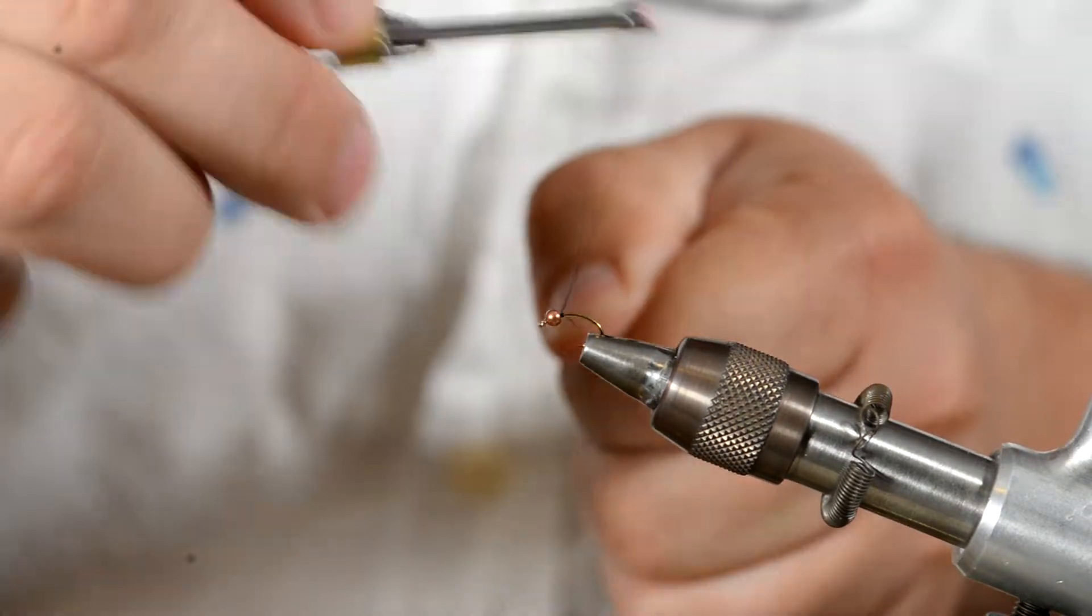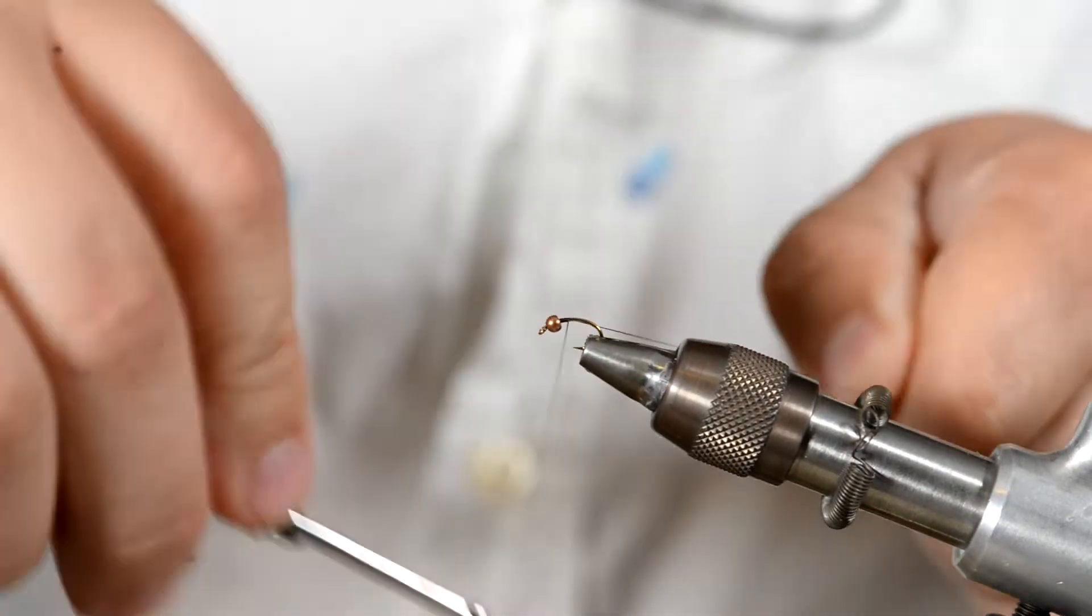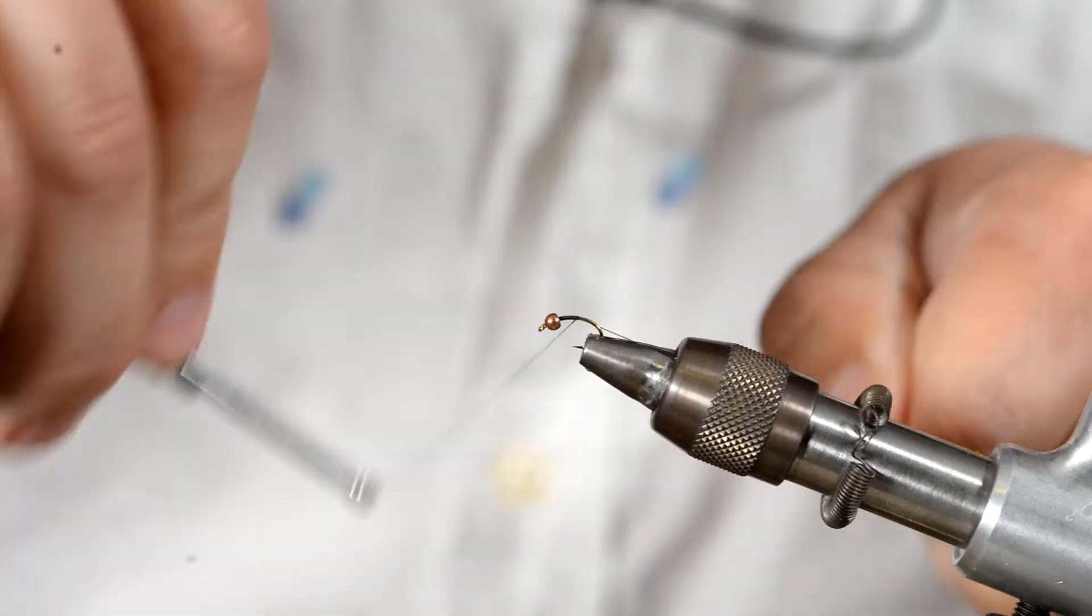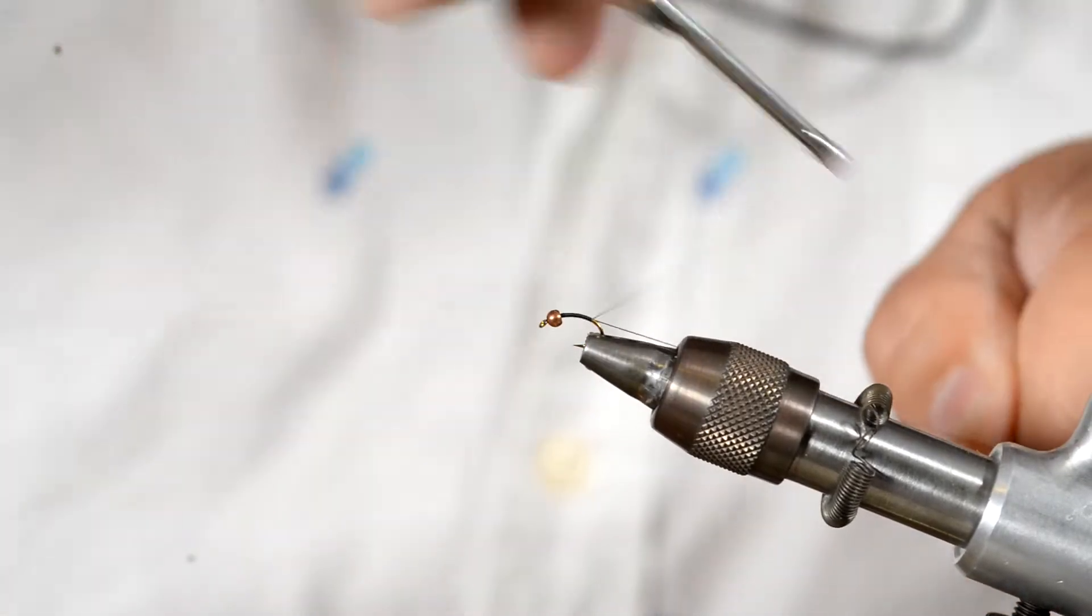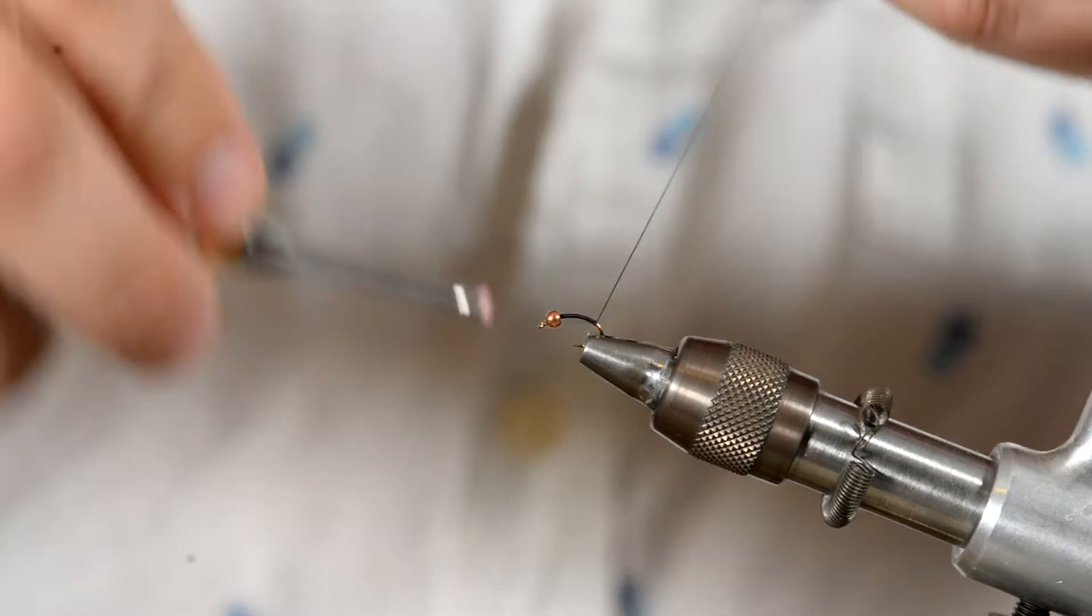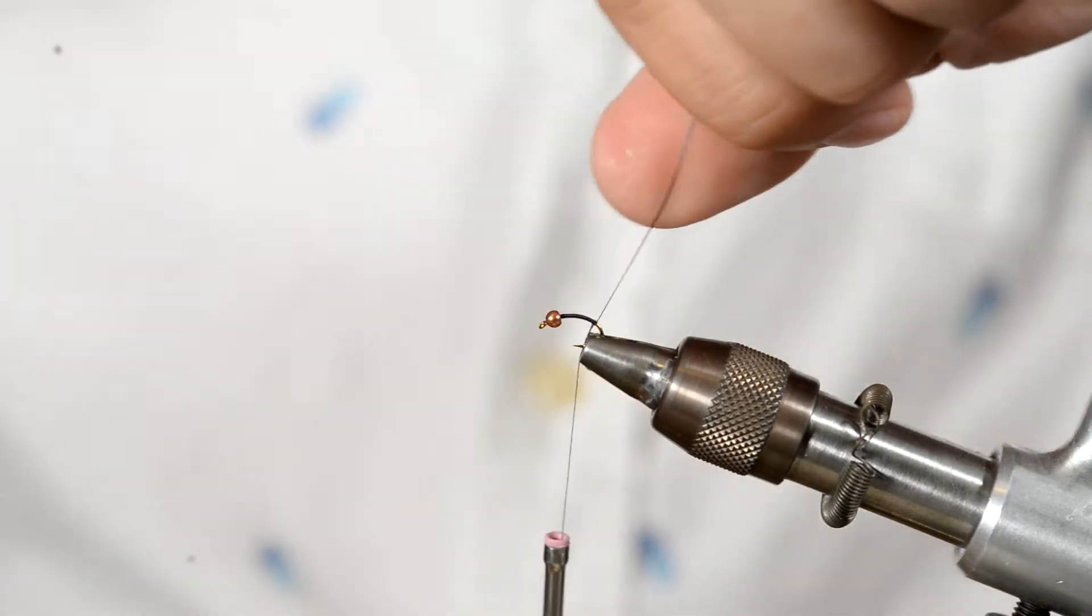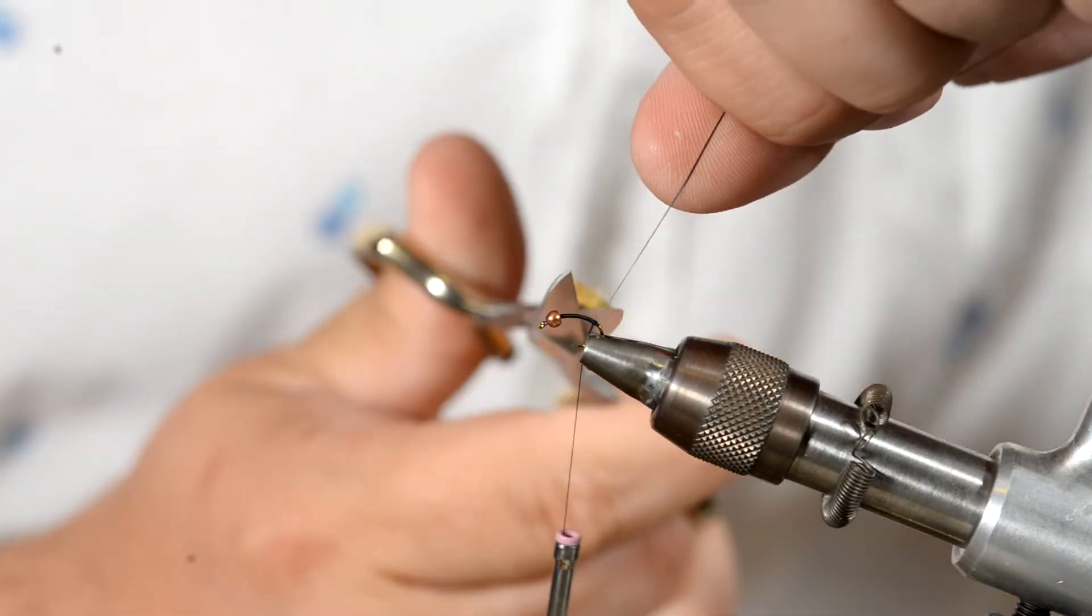After that, start your thread wraps. We're gonna bring our thread all the way back to the back of the shank of the hook here, just like so. Then we're gonna trim off the excess.